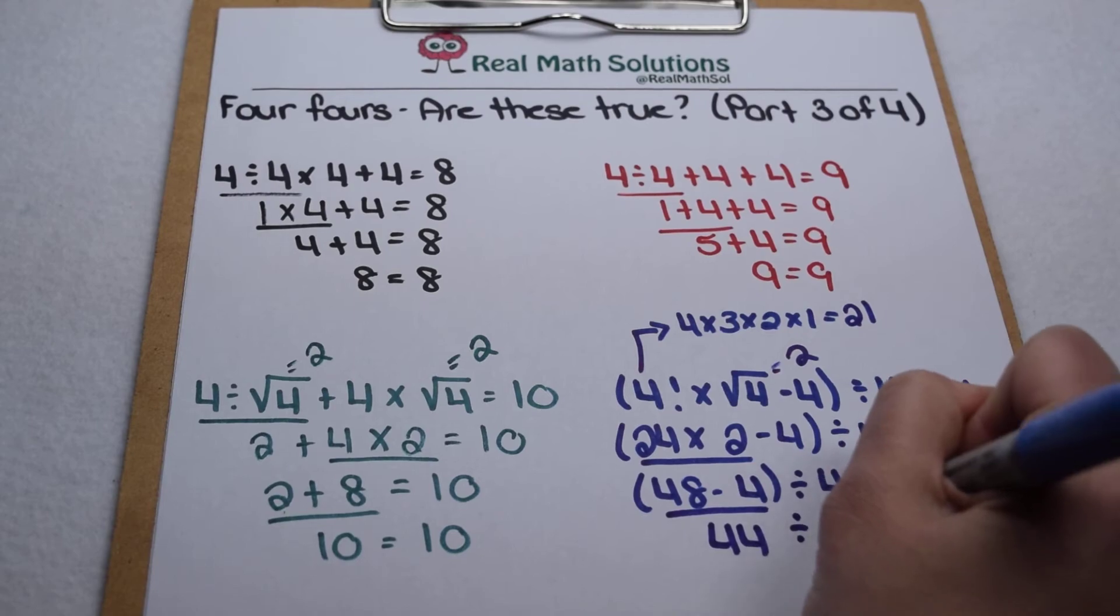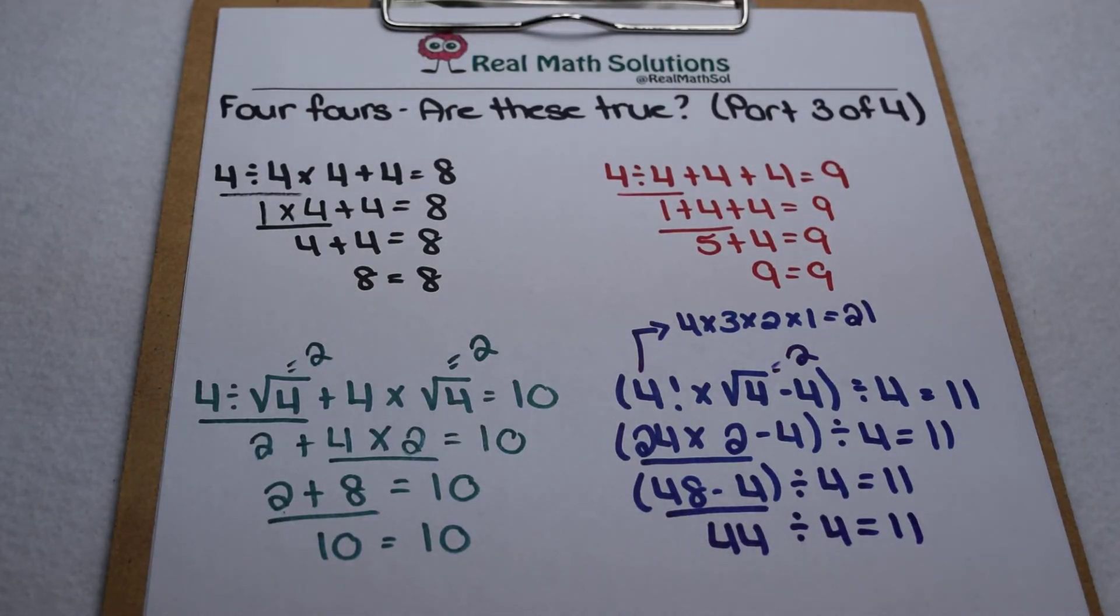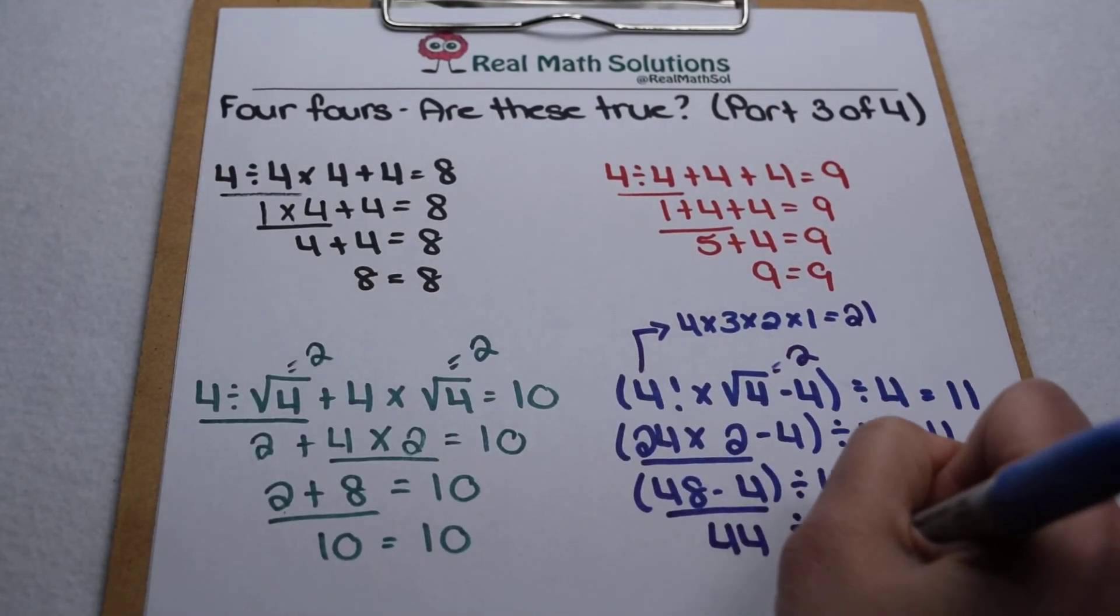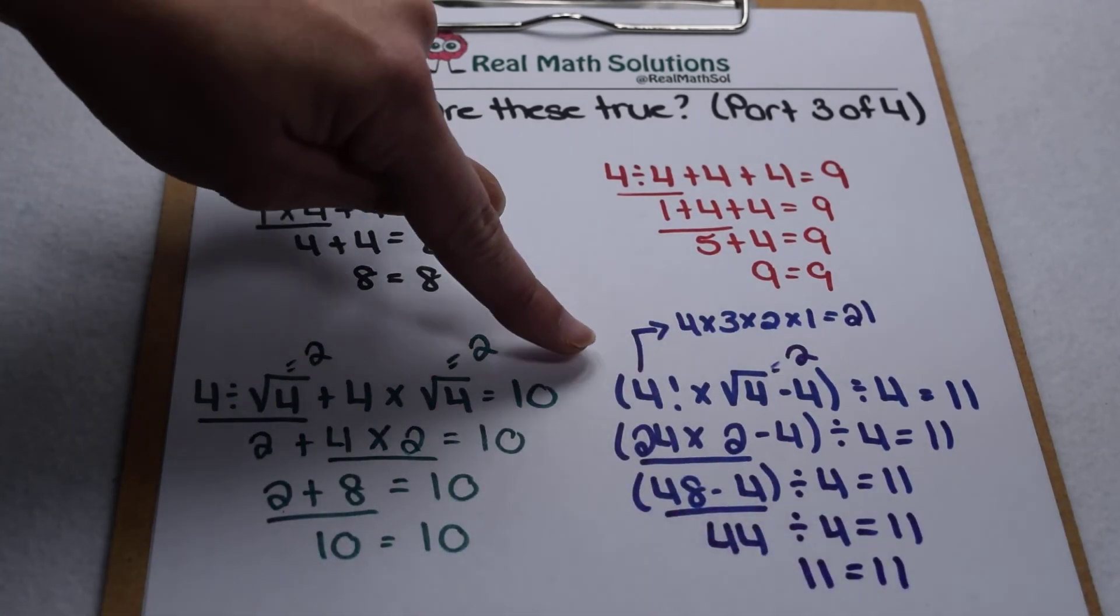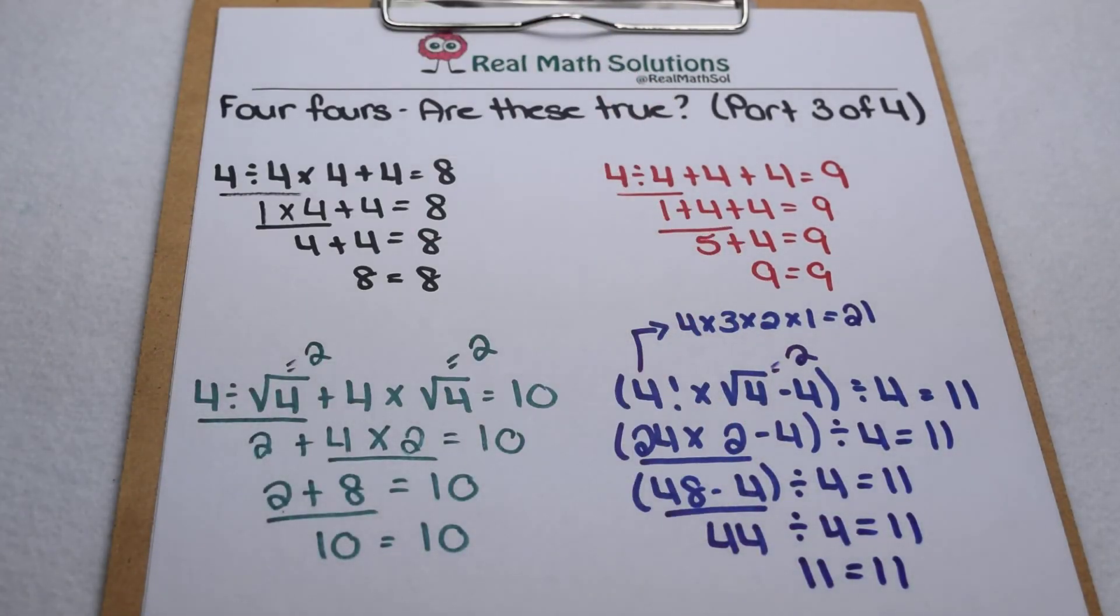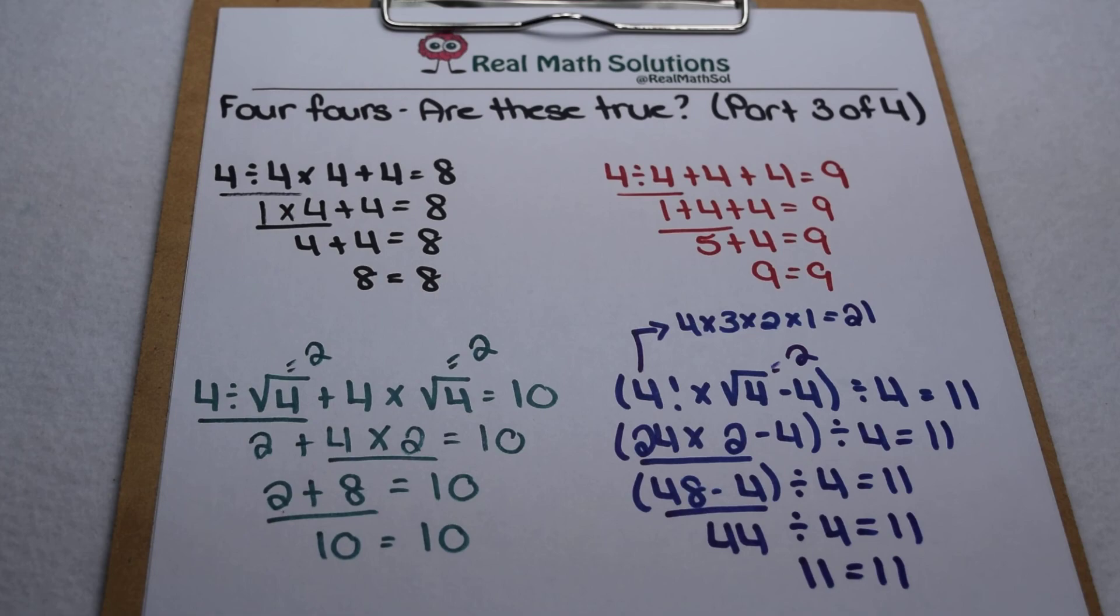and then that leaves us with 44 divided by 4. 44 divided by 4 is 11. So since we could evaluate our factorial and our square root, we see that that one does also check out. Stay tuned for the last part as we do our last two.